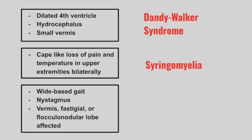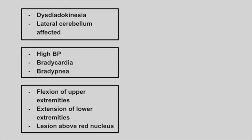Next is a patient with a wide-based gait, nystagmus, and the vermis or the flocculonodular lobes are affected. This is truncal ataxia. Next is a patient with dysdiadochokinesia and the lateral cerebellum is affected. This is appendicular ataxia.